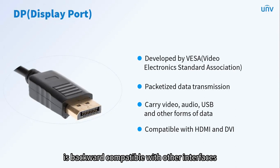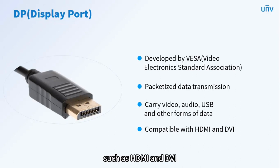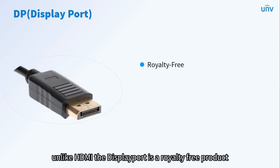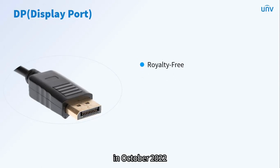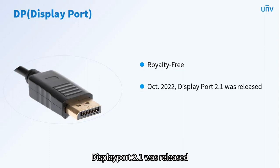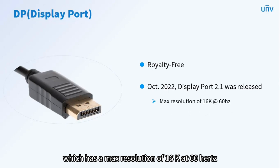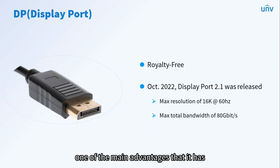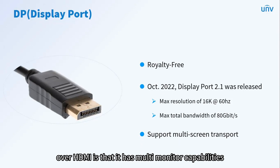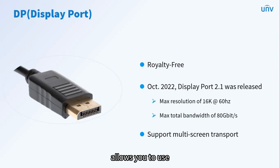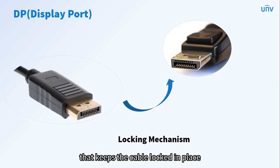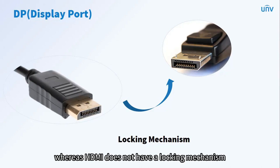The DisplayPort is backward compatible with other interfaces such as HDMI and DVI through the use of active or passive adapters. Unlike HDMI, the DisplayPort is a royalty-free product. In October 2022, DisplayPort 2.1 was released, with a max resolution of 16K at 60 Hz and a max total bandwidth of 80 Gbps. One of the main advantages DisplayPort has over HDMI is multi-monitor capabilities — it allows you to connect multiple monitors in a daisy-chain configuration. Another advantage is that it has a locking mechanism that keeps the cable locked in place, whereas HDMI does not.